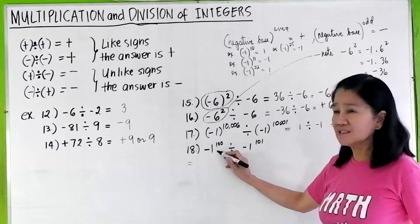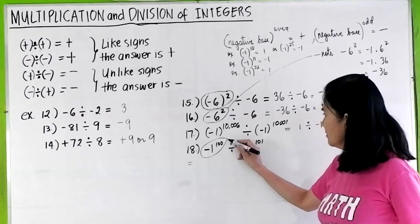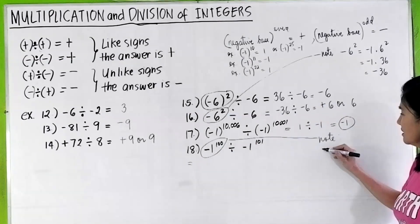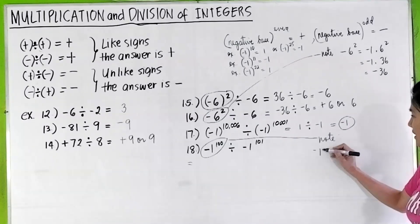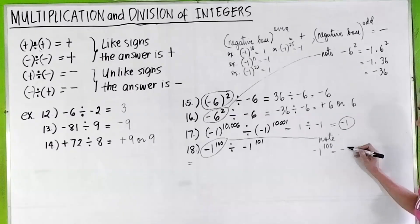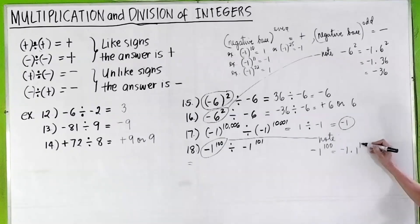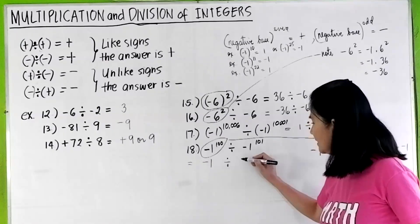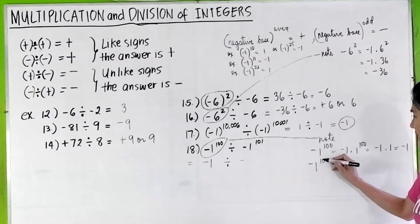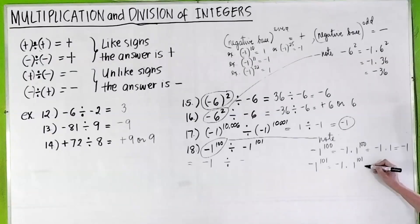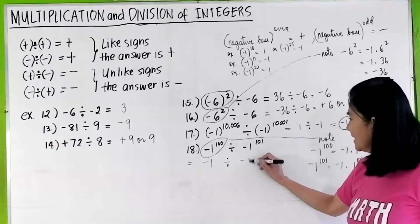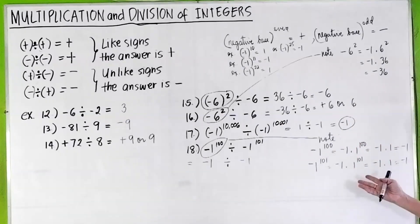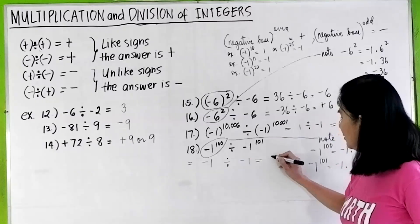In problem 18, remember: when there is a negative outside, the answer is always negative. Negative 1 raised to the 100 means negative 1 times 1 to the 100, giving negative 1 times 1, which is negative 1. So this is negative 1 divided by negative 1 to the 101st — still negative 1 times 1 — which is still negative 1. So negative 1 divided by negative 1 is positive 1.